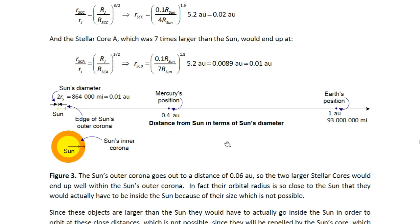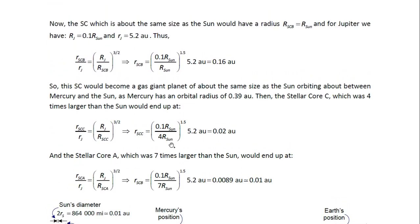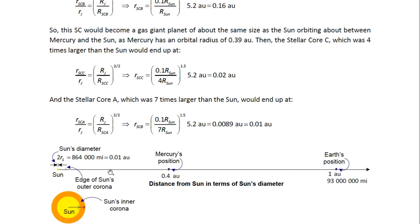Now let's see where these distances really are. The Sun's diameter, which is twice the radius of the Sun, is 0.01 AU. So this distance is the same as the Sun's diameter. So this is Mercury's position at about 0.4 AU. So one of them would be about here. No, that was B. So that was the one that was about the same size as the Sun, would be about here.